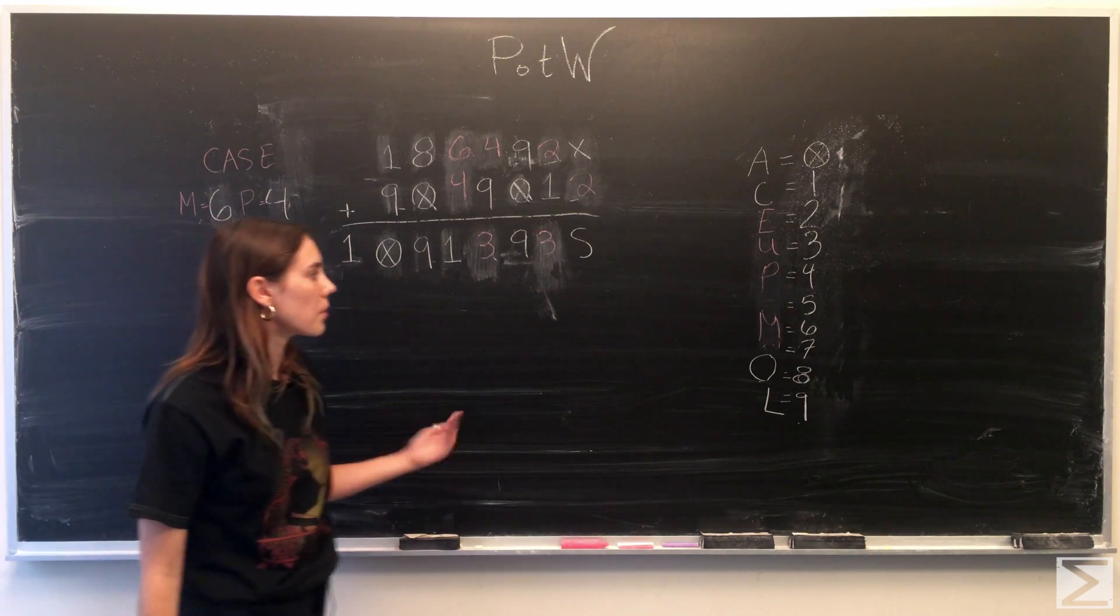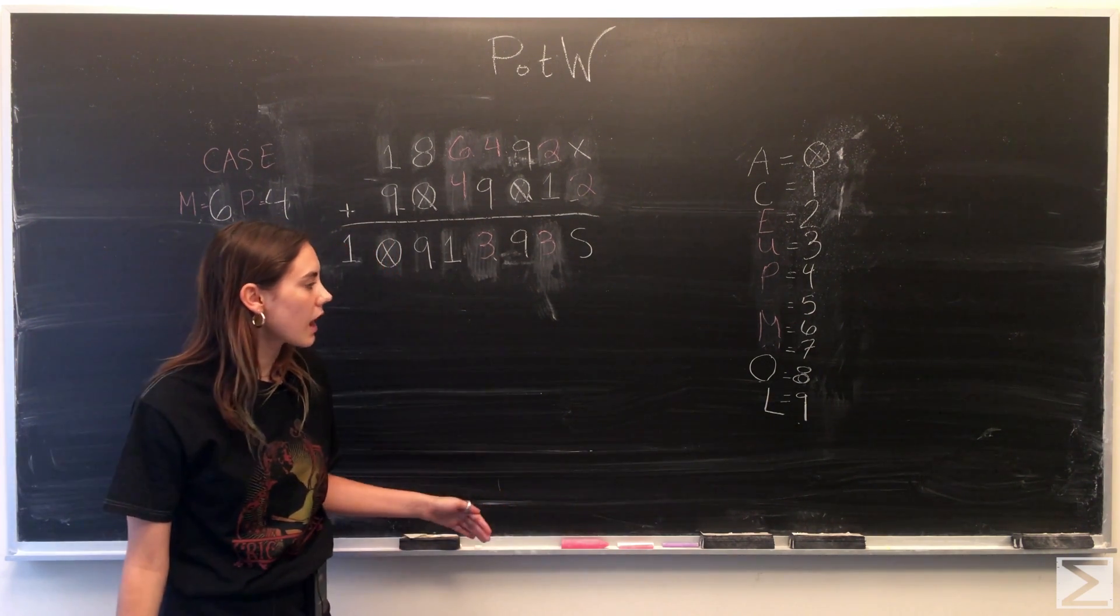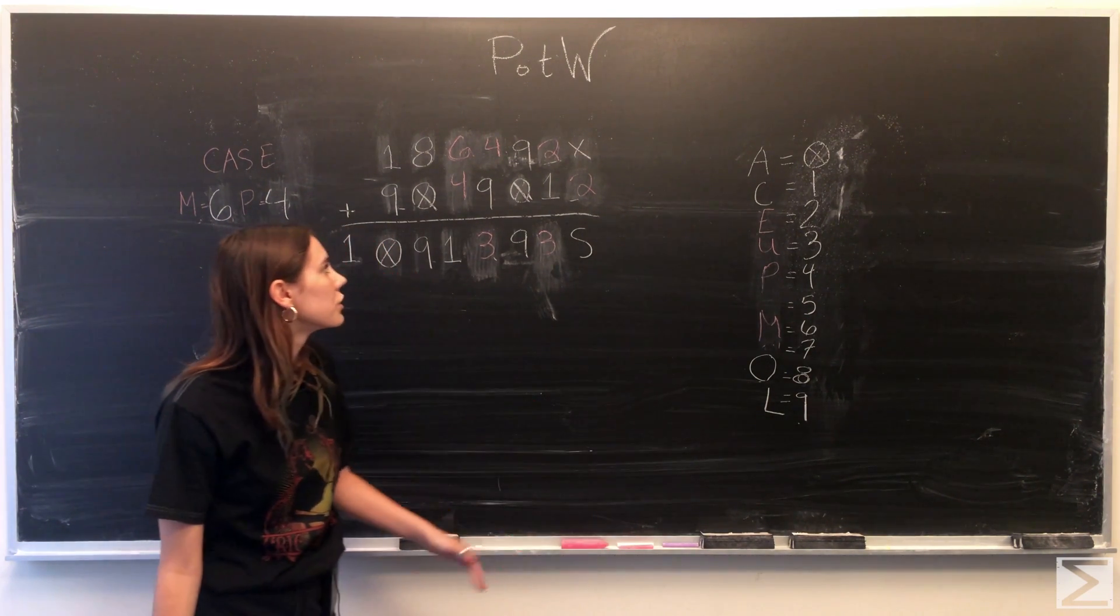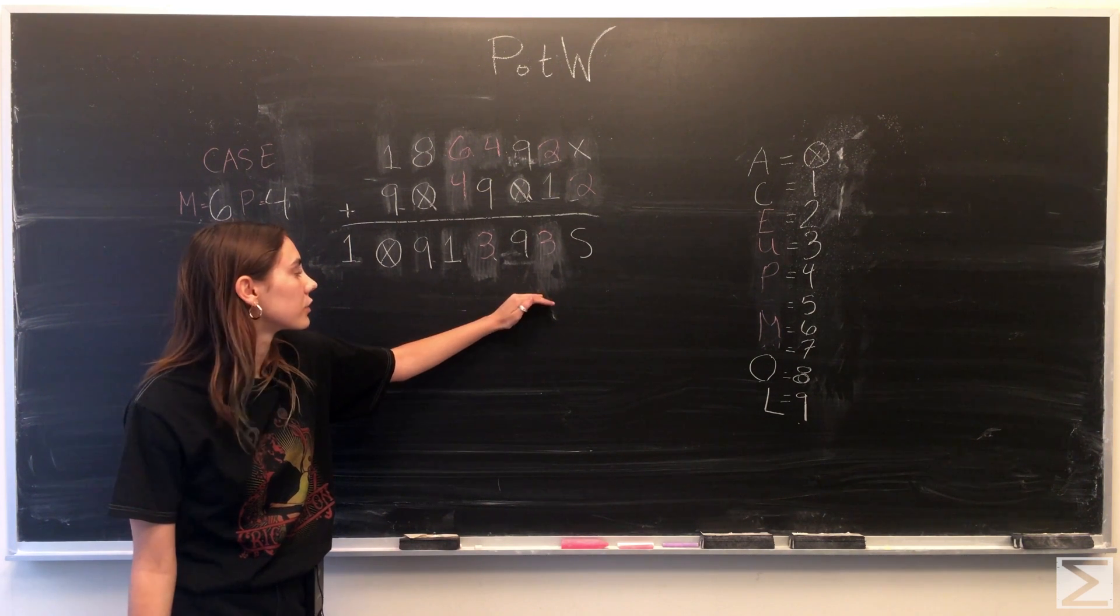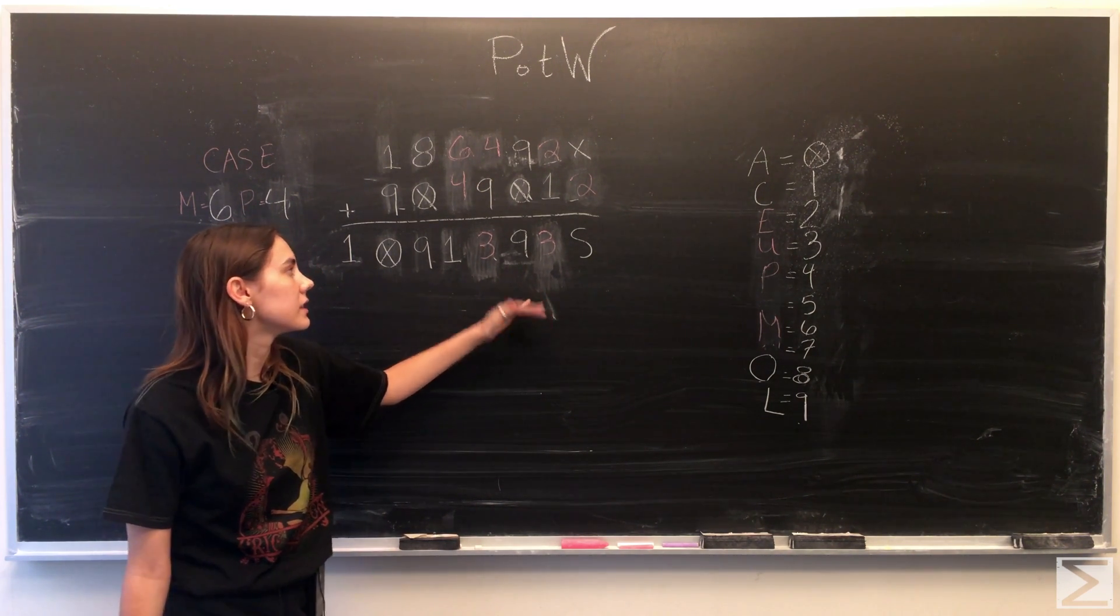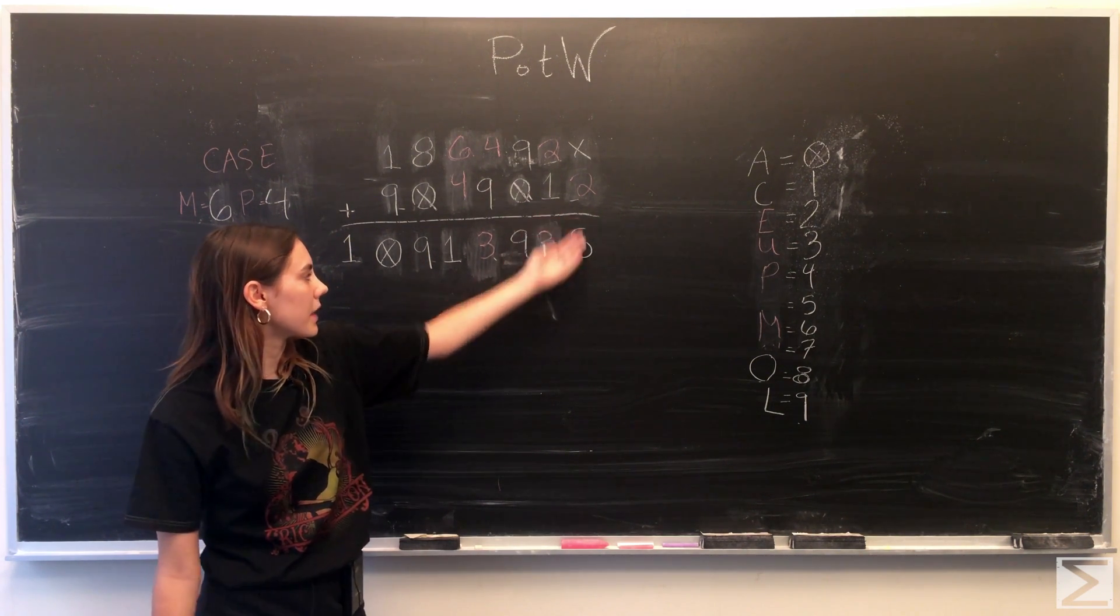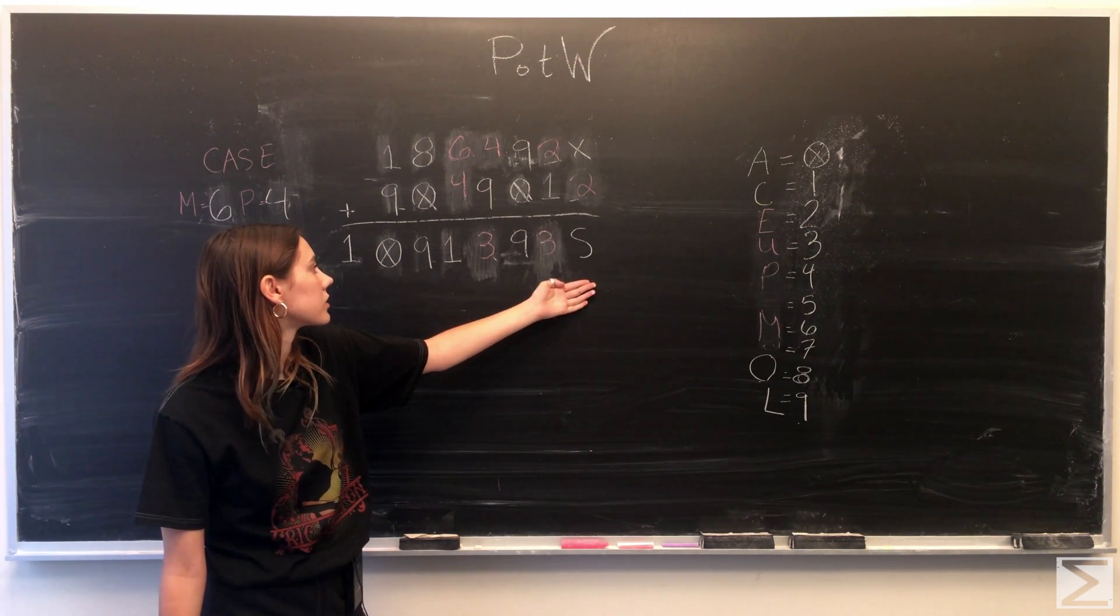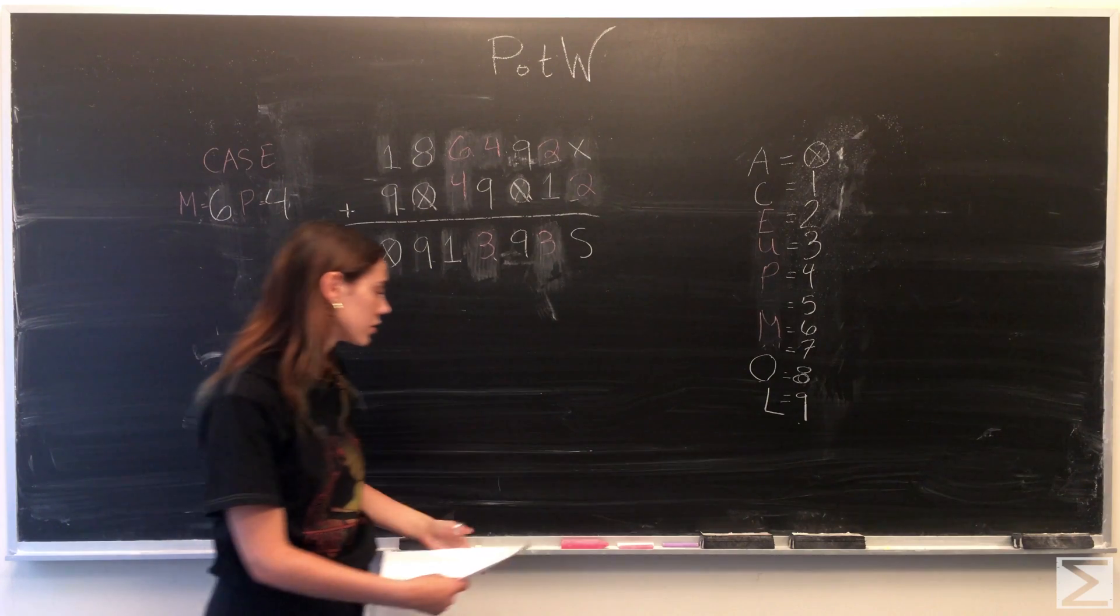From the remaining available numbers that we have, 5 and 7, we can choose for X and for S. So it really only makes sense to have X equal to 5 and S equal to 7. That makes this equation true and also makes the rest of the equation true.